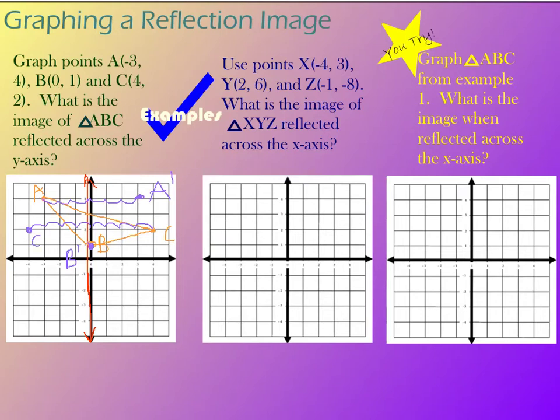All right. So I connect my dots. I'm going to do that with a little bit of a thicker marker so you can see A, B, C prime. A prime, B prime, C prime. My purple triangle, that is my reflection of the original orange triangle, A, B, C. So let's look at another example.